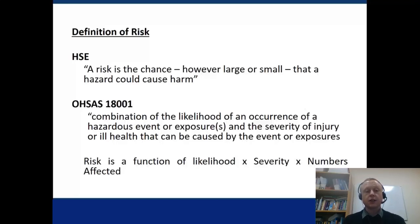OHSAS 18001 refers to risk as a combination of the likelihood of an occurrence of a hazardous event or exposures and the severity of the injury or ill health that can be caused by the events or exposures.